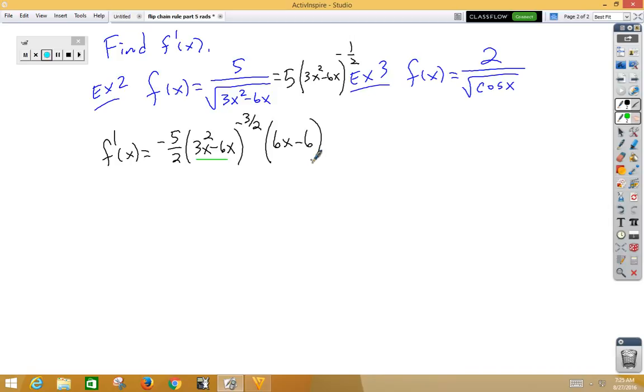Let's try to clean that up a little bit. If we notice that with the 6x minus 6, if we take out a 2 inside, we would get a 3x minus 3. And the reason we would want to do that is now we can cross-cancel these twos.